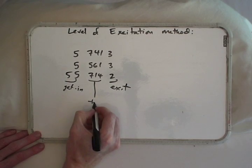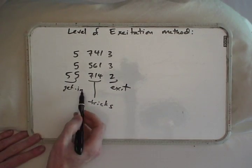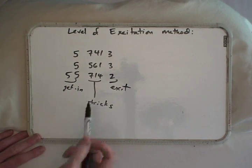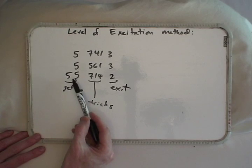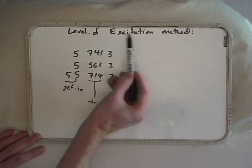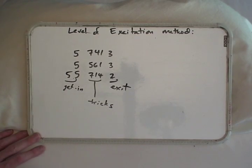These are our tricks here that we want to convert between and we know the get-in and exit sequences. In the case of 741, a 5 gets you in and a 3 gets you out. For 714, it's more excited, it has a higher level of excitation—a 55 gets you in and a 2 could get you out.